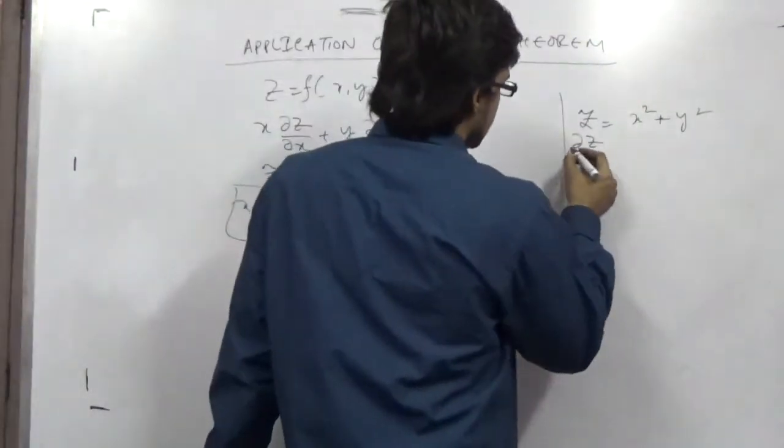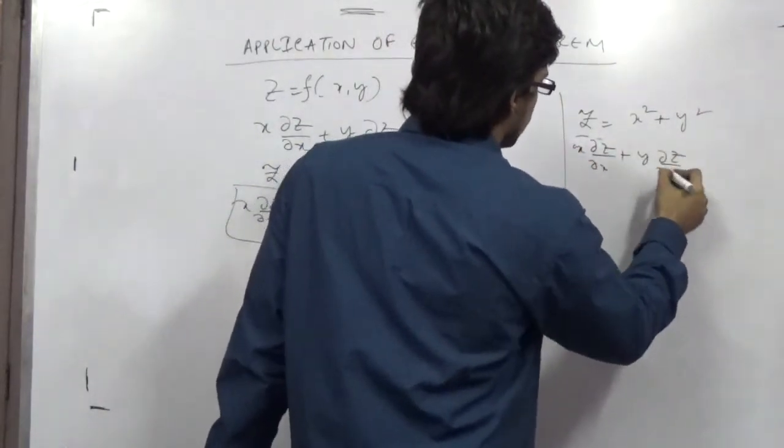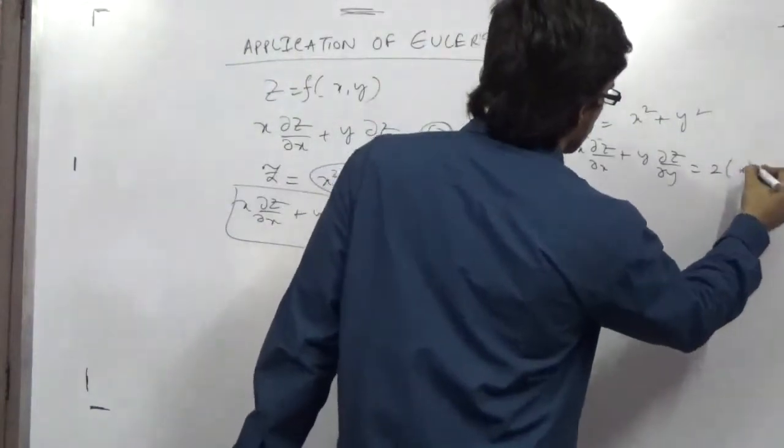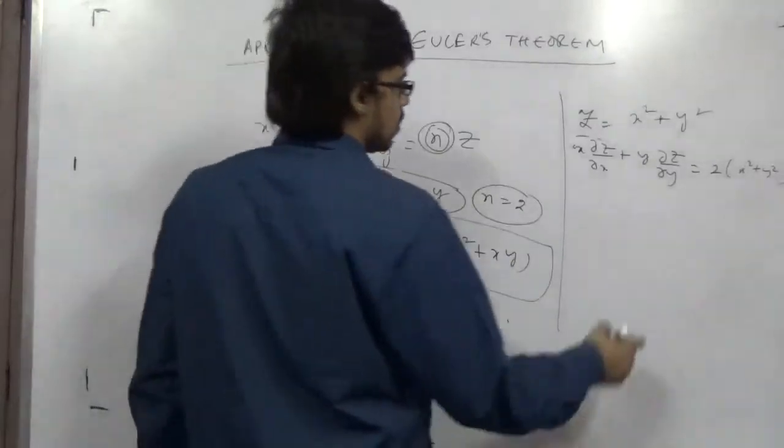So x times del z del x and y times del z del y, this will obviously give you 2 times x squared plus y squared. Okay, now I am showing you whether it is correct or not.